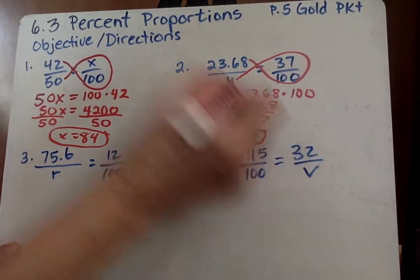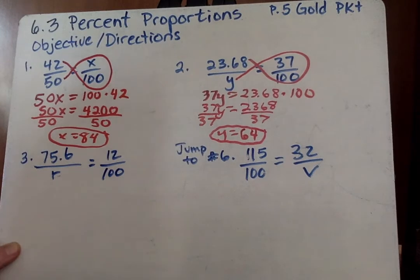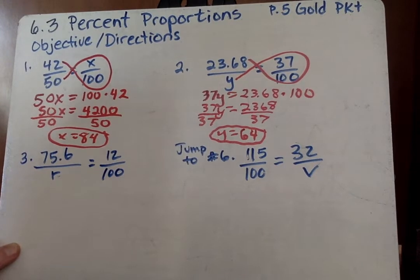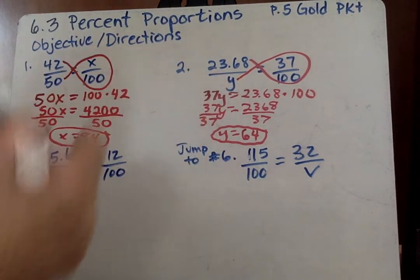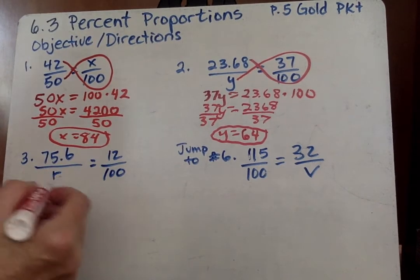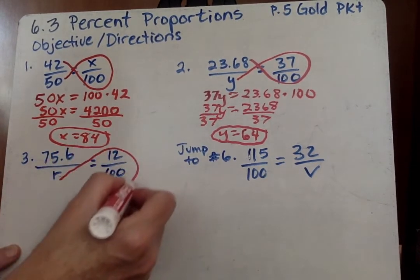So again, you must show your work. If I just see y equals 64, I'm going to think you just cheated. So I don't want any of that. I want you to make sure you show every step along the way. All right. Down here, again, we're going to do the fish.